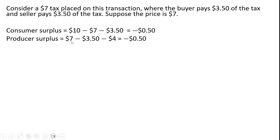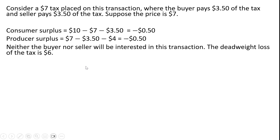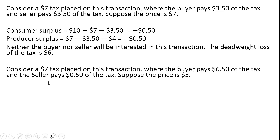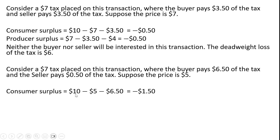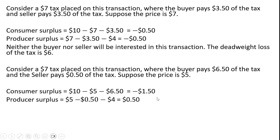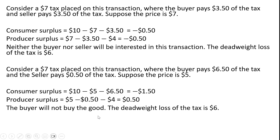As for the producer, the producer receives the price of $7 minus the tax minus the marginal cost — thus the producer would also be worse off. This trade would not take place, and you would have a deadweight loss of $6. Now consider a $7 tax where the buyer pays $6.50 of the tax and the seller pays $0.50. At a price of $5, the consumer surplus is the maximum willingness to pay minus the price minus the consumer's tax — the consumer would not be interested. The producer surplus is positive, but the consumer would not agree. The deadweight loss is again $6.